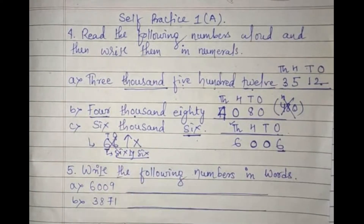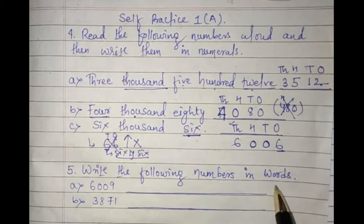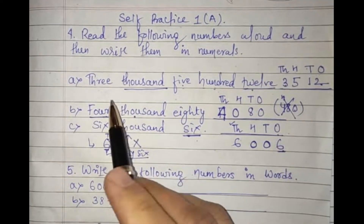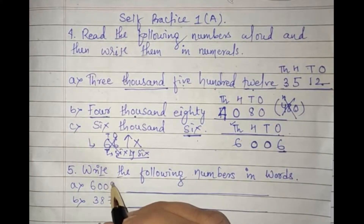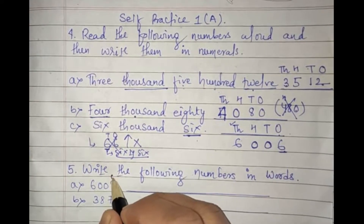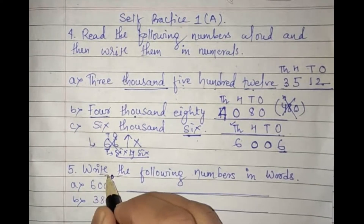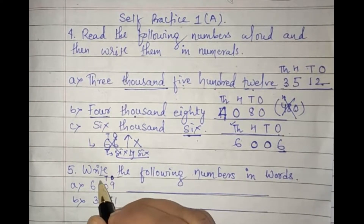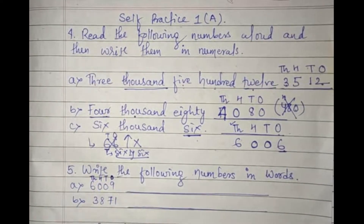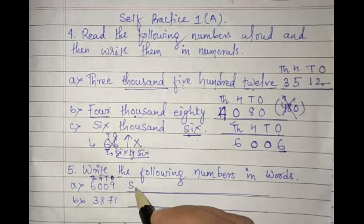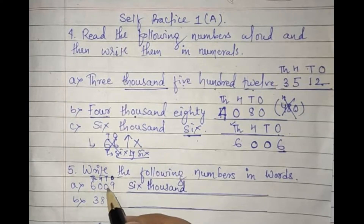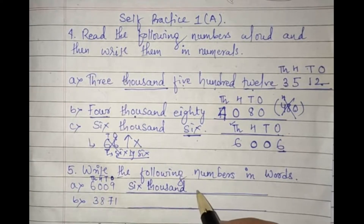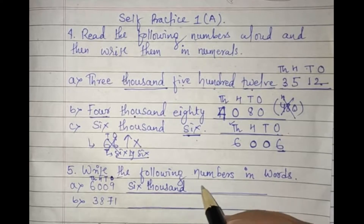Question number five: write the following numbers in words. You have to expand the numeral into word form. First, place the digits in the notation — ones, tens, hundreds, thousands. Do not start with thousands; start with ones, tens, hundreds, then thousands. For example, 6009: six is in the thousands position, hundreds and tens have zero, so we write 'six thousand nine.'